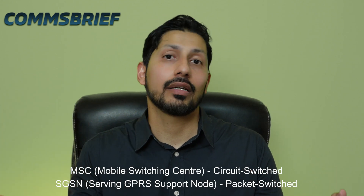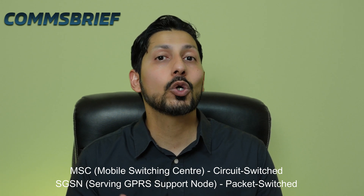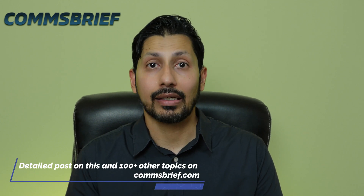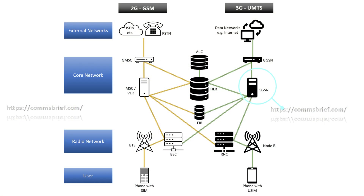It basically means that both MSC and SGSN are counterparts. Since SGSN is a mobile core network entity, just like the MSC, it has similar responsibilities. SGSN takes care of mobility management for mobile data, billing, and also management of data sessions. If you look at the 2G GSM mobile network architecture, you will see that SGSN is connected to the BSC, which is connected to the BTS, which provides communication to mobile phones.